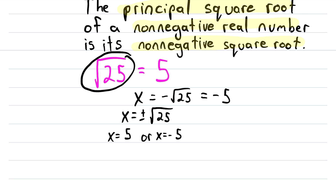And that's really the importance of the principal square root. Because we have a principal square root, we can use this radical symbol to refer to one specific number, which is nice. That just means that it's important that you know exactly what number the symbol refers to, and that is the principal square root.